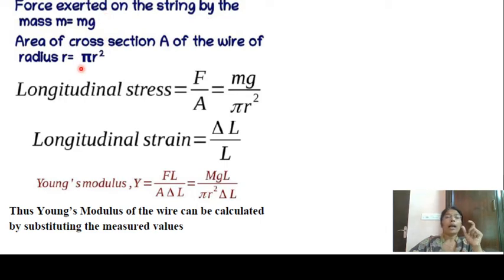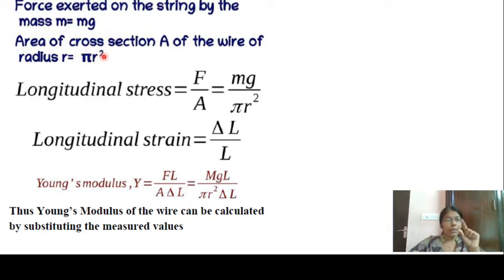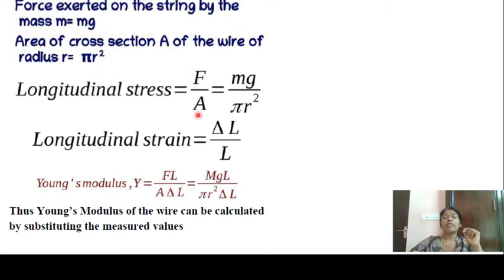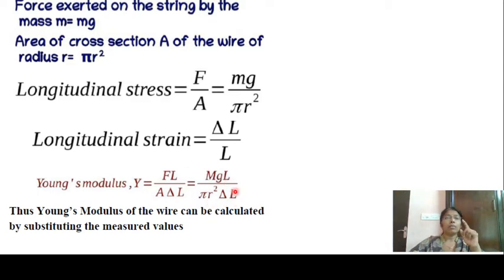Then x is equal to mg, and the area of cross-section — if you are looking at a cylindrical wire, the area of cross-section is π r². The stress is F/A = mg/πr². The longitudinal strain is δL/L. Therefore Young's modulus Y equals FL/AδL, which gives MgL divided by πr²δL.